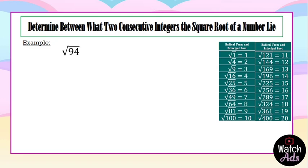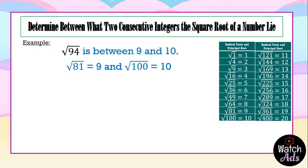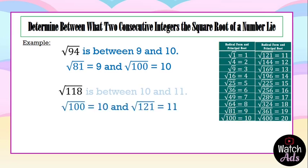Next, we have the square root of 94. It is located between the square root of 81 and the square root of 100. Taking its principal roots, the square root of 94 is between 9 and 10. Another example is the square root of 118. The square root of 118 is located between the square root of 100 and the square root of 121. Taking its principal roots, 10 and 11, we can now conclude that the square root of 118 is between 10 and 11.